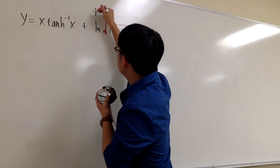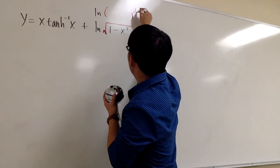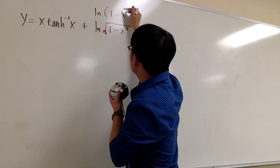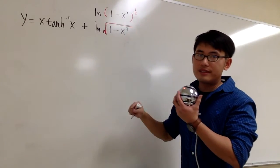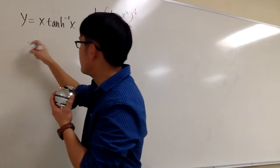This right here, I can look at this as ln parentheses to the 1 half power 1 minus x squared inside. And I can take the 1 half to the front. So before we do calculus, let's do the algebra first.